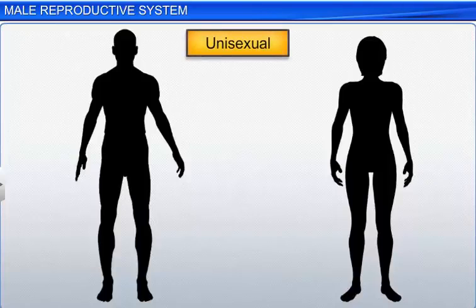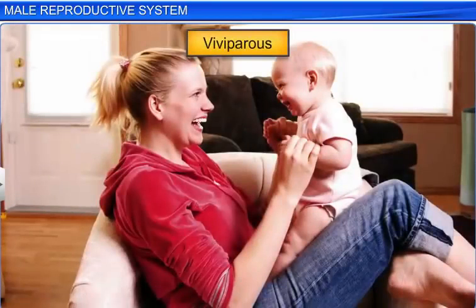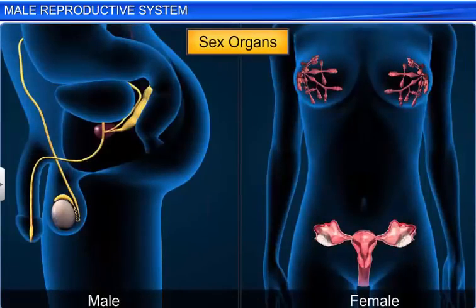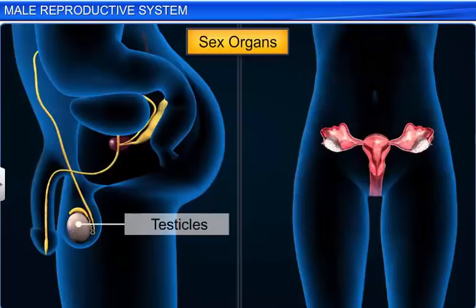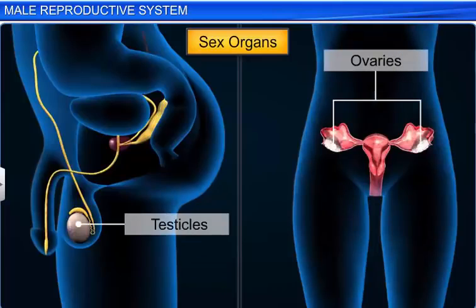Humans are unisexual and viviparous. The major reproductive organs include the external genitalia, like the penis in males and the vulva in females, along with a number of internal organs including the gamete-producing gonads, like the testicles in males and the ovaries in females.